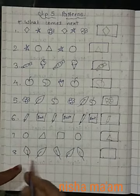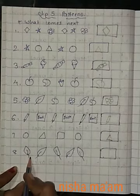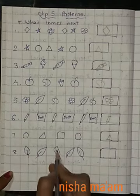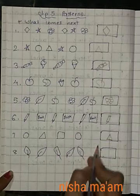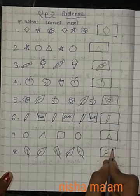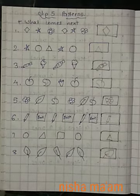See, this leaf is this side. This is this side. This side, this side. Which will come here? This circle will come. So, you have to draw it this side. Okay?